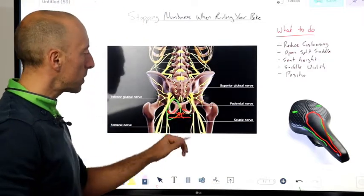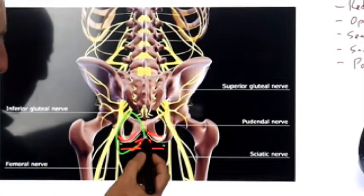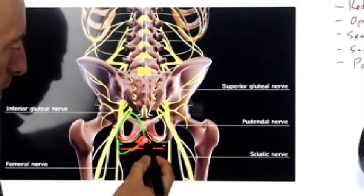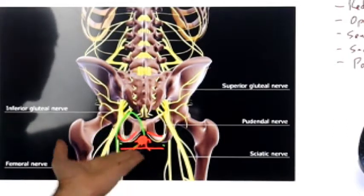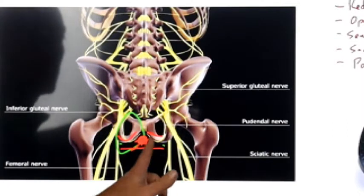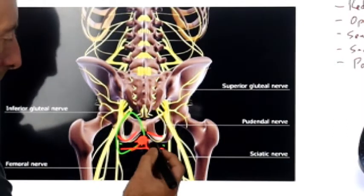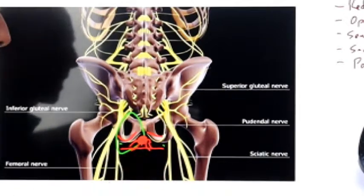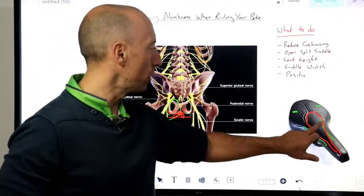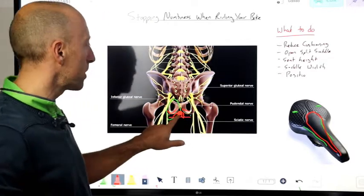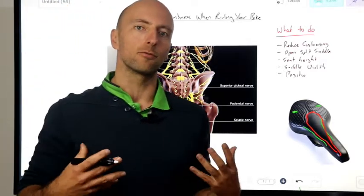For men, this is really important because the actual base of the penis runs right through here. There's a big circle that runs through there. So that gets compressed very easily. And with women, the labia sit through that area as well on either side, and that can create irritation. So having this area open relieves a lot of pressure off that area and opens it right up.